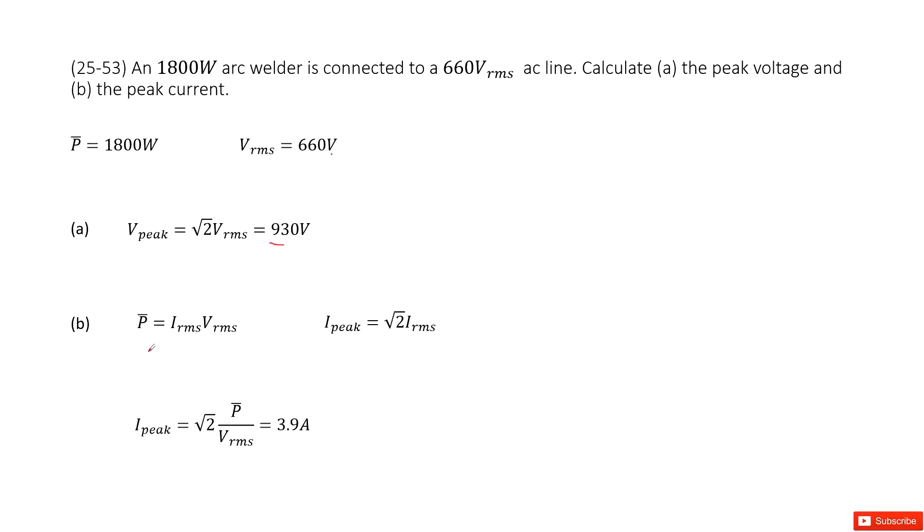And this definition for alternating current is the power equals I RMS times V RMS. So in this case, we just get the current for RMS.